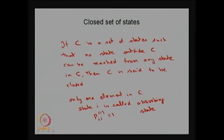That means the system starting from state i moves into the same state i in one step with probability 1. If this probability is 1, then we say that state is going to be an absorbing state. In other words, you can define the absorbing state in this alternative way.